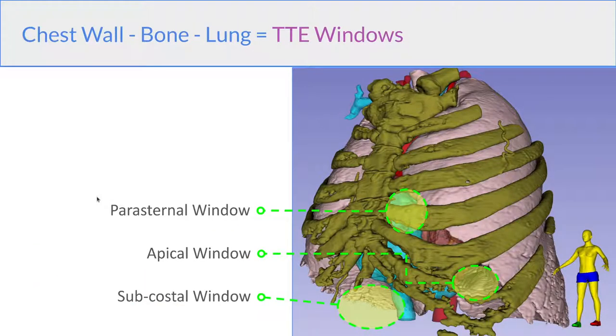TTE windows are defined by the ribs and the lungs, which leave a few openings through which you can fairly reliably see the heart in most patients. So one set of openings are adjacent to the sternum, just on the left, near the third and fourth to fifth intercostal spaces. And you get your parasternal windows there. You have a window near the apex and a subcostal window where you can look through the liver and see the heart.